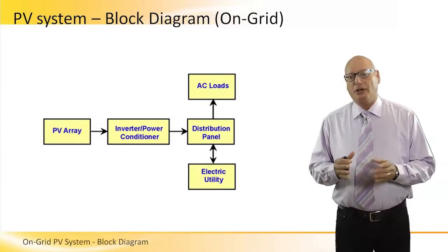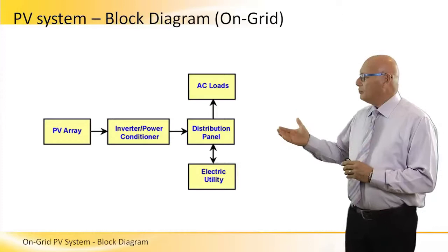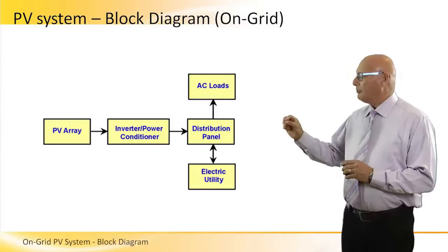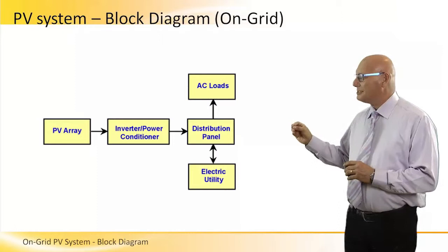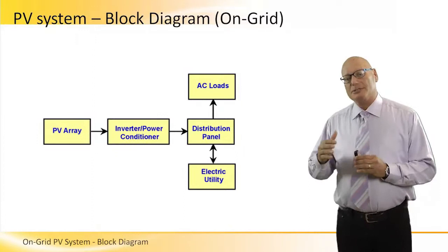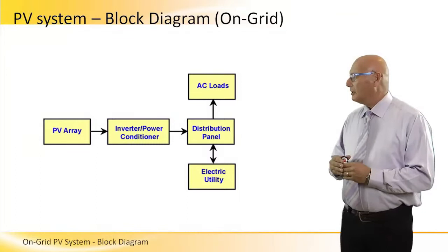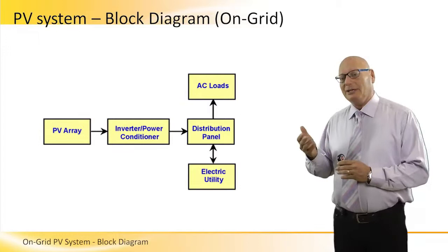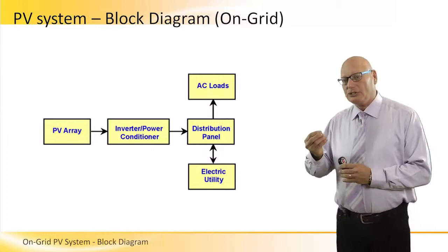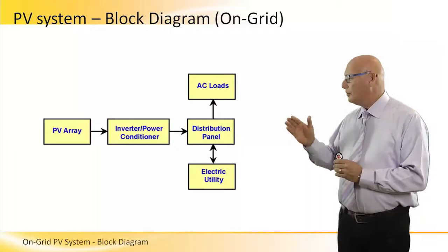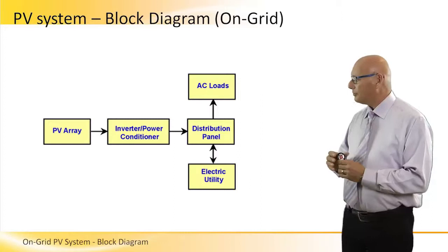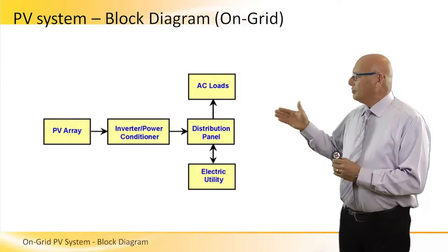This is a top-level block diagram of an on-grid PV system. The PV array, visible in the picture, goes into the inverter and power conditioner. The PV array receives solar energy and produces DC electricity. Because the Sun is at different angles and there are various environmental parameters, the DC level coming out of the array will vary. For this reason, the inverter not only inverts from DC to AC but also needs to condition the DC level to stabilize it, in order to provide it to the distribution panel.